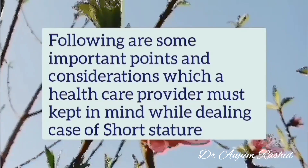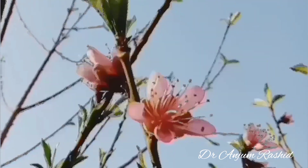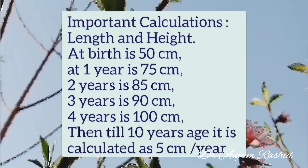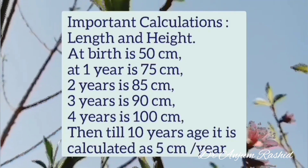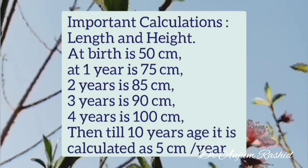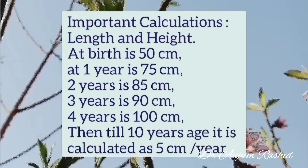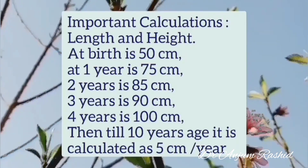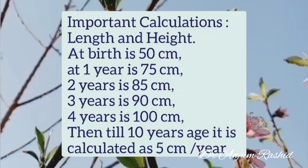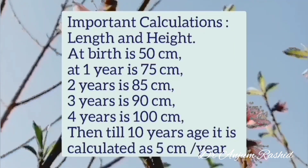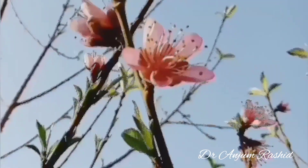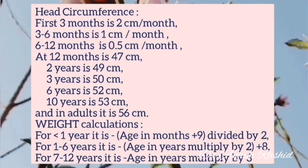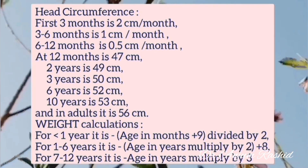Some important calculations: length and height — at birth it is 50 cm, at one year it is 75 cm, at two years it is 85 cm, at three years 90 cm, at four years it is 100 cm, and then until 10 years it is calculated as 5 cm per year. Next, head circumference growth rate: in the first three months of life it is 2 cm per month.